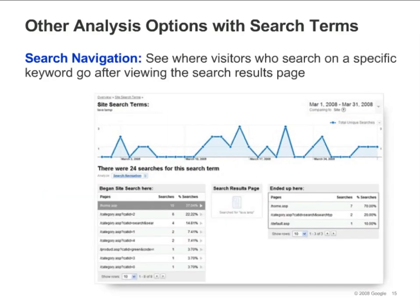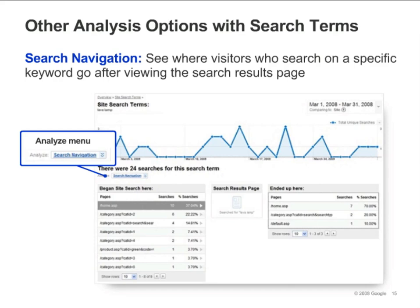Where did visitors who search on a specific term start the search from, and where did they go after searching? To find this information, go to the Search Terms report for a specific keyword, and select Search Navigation from the Analyze drop-down menu. Below the graph, you'll see three columns. The table on the left shows the pages from which visitors began their searches. The icon in the middle represents the search results page, and the table on the right shows the pages people visited immediately after the search results page. Click one of the entries in the table on the left to see where those people ended up.